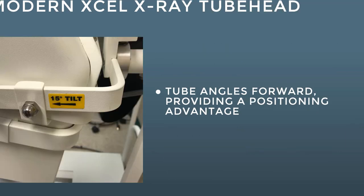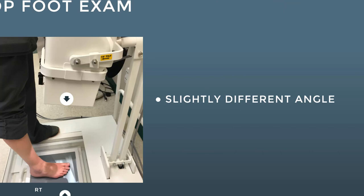From the side, this camera automatically has a 15-degree tilt, which conveniently prevents you from having to turn the patient sideways. Some older units require the patient to stand sideways to achieve that 15-degree angle. With newer systems, some cameras only shoot straight up and down — in that case you can position the patient's foot at an angle to achieve the same result.